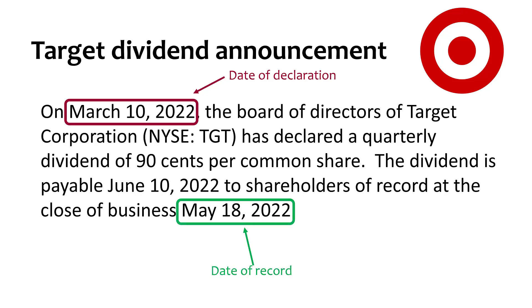The date of record is May 18. As part of the declaration, the corporation announced the record date, which is the date on which the company looks to see who its stockholders are. Only those who are stockholders on the date of record will receive the dividend. The date of record usually follows the declaration date by a few weeks.